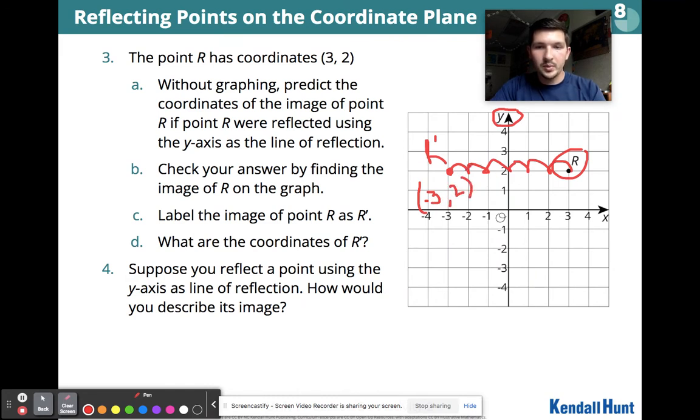Our new coordinates for this are now negative 3, 2. When we reflect over the Y axis, what's changing? If this is 3, 2, hopefully you're realizing that from 3 it became negative 3, but our 2 stayed the same.